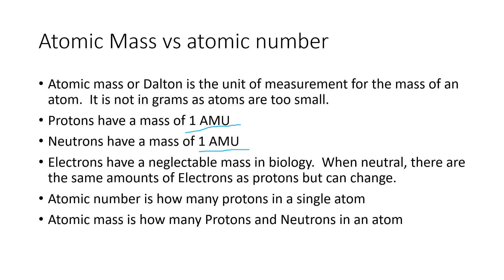When calculating atomic mass, you add the number of protons and neutrons; electrons are ignored. The atomic number tells you just how many protons there are. All atoms of a certain element have the same number of protons, but they can vary in neutrons — giving you different isotopes, as with hydrogen.